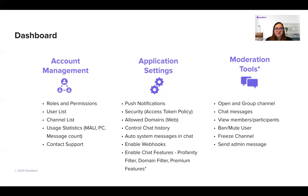You can also contact Sendbird support through the dashboard. The application settings allow you to set up push notifications and configure an access token policy to decide whether to allow or deny users from connecting to Sendbird if they have an access token or session token. You can specify which domains are allowed, and if you're sending traffic through your website, you can allow that domain explicitly and deny all others. This is also where you control chat history — if you want users joining an existing channel to see prior messages, you can turn that on here.